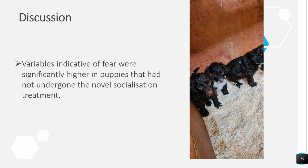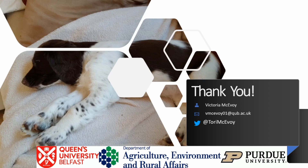In short, preliminary investigation has shown that puppies on a commercial breeding establishment that are given additional enriching socialisation are less likely to show behaviours indicative of fear at eight weeks of age. This has serious implications for the management of large-scale CBEs and the welfare of puppies raised there. Future studies on CBEs could focus on maximum and minimum levels of socialisation required to reduce the chances of puppies showing undesirable behaviours as adults. Thank you for your attention.